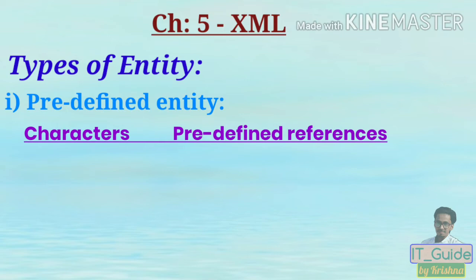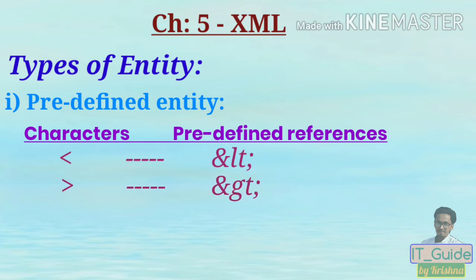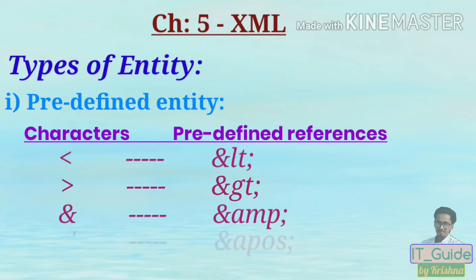Number one: to display the less-than sign, specify &lt; (ampersand, l, t, semicolon). Number two: to display the greater-than sign, specify &gt; (ampersand, g, t, semicolon). To display the ampersand sign, specify &amp; (ampersand, a, m, p, semicolon). To display an apostrophe, specify &apos; (ampersand, a, p, o, s, semicolon).